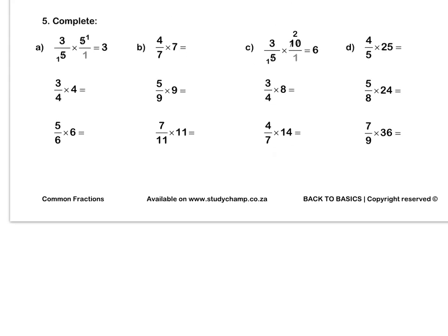Question 5. We have three fifths times 5, which we put over 1. We simplify our 5s and multiply out to get 3. Let's do B together. We can write our 7 over 1, then we simplify our 7s and we multiply out to get 4 wholes. Press pause to complete questions A and B by yourself.